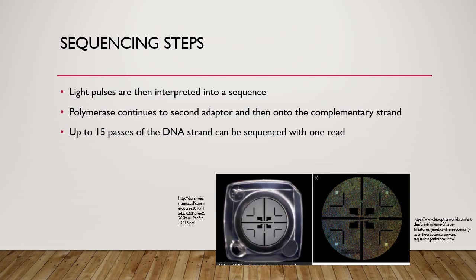Once you have your light pulses, they are then interpreted into a sequence, as seen in the lower left picture on the slide. The lower right picture is an example of what the cell looks like before sequencing begins. The circular DNA template allows the polymerase to continue around to the second adapter sequence and then onto the antisense strand, allowing for long reads to occur. Long reads are then split into sub-reads where the adapter sequences are recognized and removed, and after up to 15 passes, you will get 99% accuracy in your read.